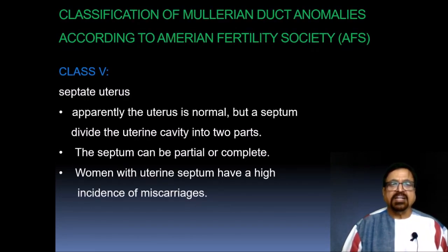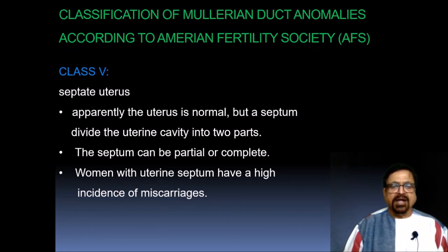Class 5 is the septate uterus. Apparently the uterus is normal, but a septum divides the uterus into two parts. The septum can be partial or complete. A woman with a uterine septum has a high incidence of miscarriage.